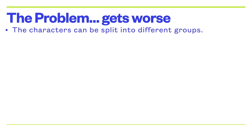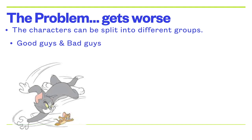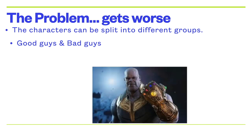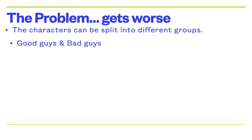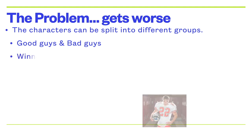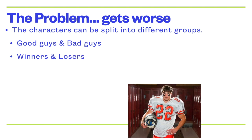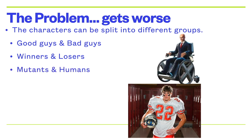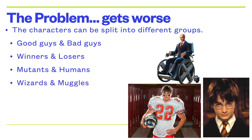One popular way that a lot of good writers use is they split the characters into different groups. The most common way is good guys and bad guys — we've seen this from Tom and Jerry cartoons, the Avengers, to Hallmark movies. But we can get more complicated than that. The problem can get worse because the winners have become the losers, or the losers are now winning. We have mutants versus humans, and even different groups of mutants. We can have wizards versus muggles, with different groups of wizards too. So you can make the problem worse by splitting characters into groups and having those groups conflict with each other.